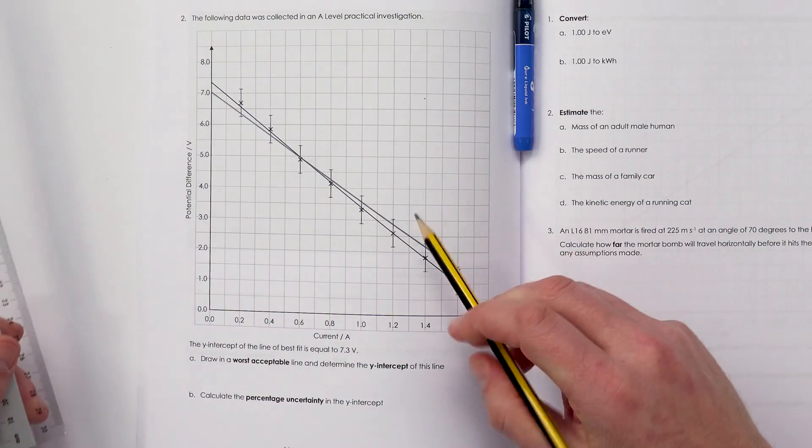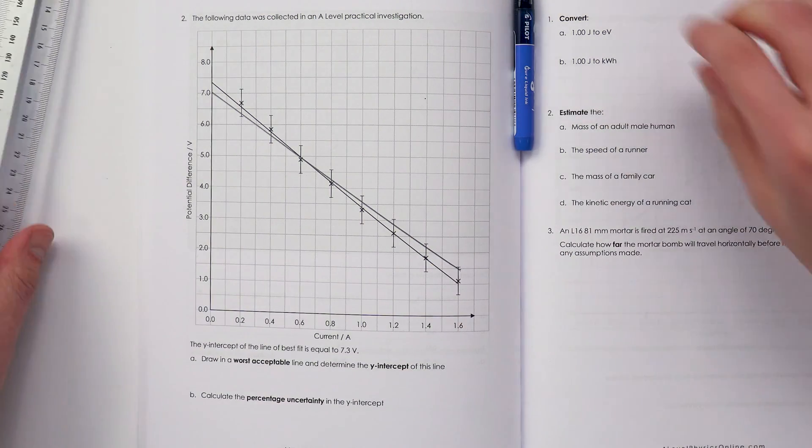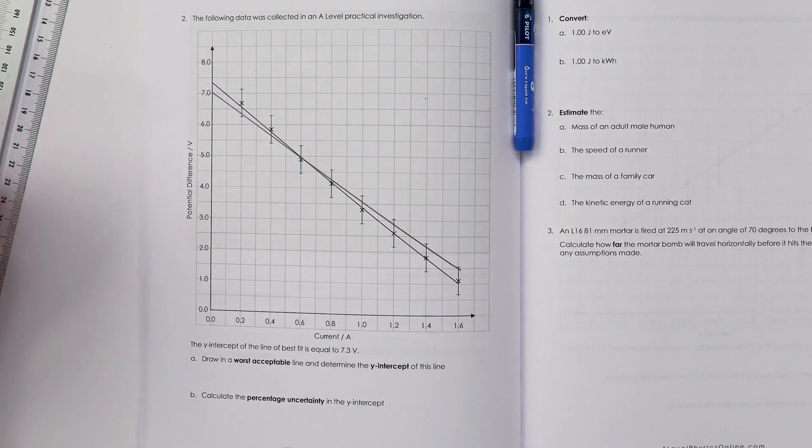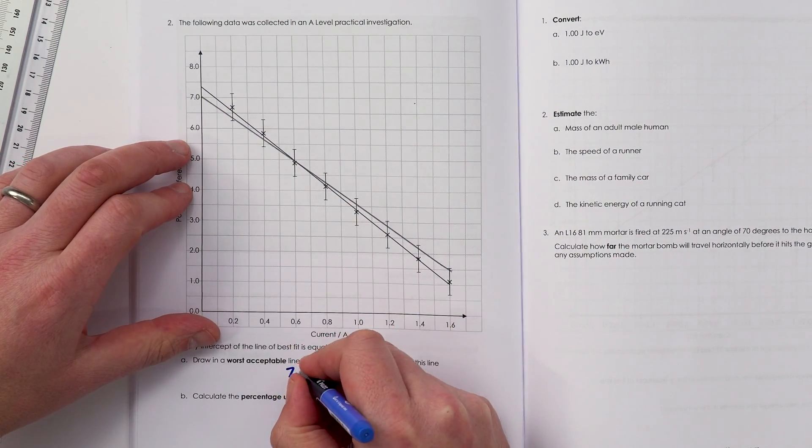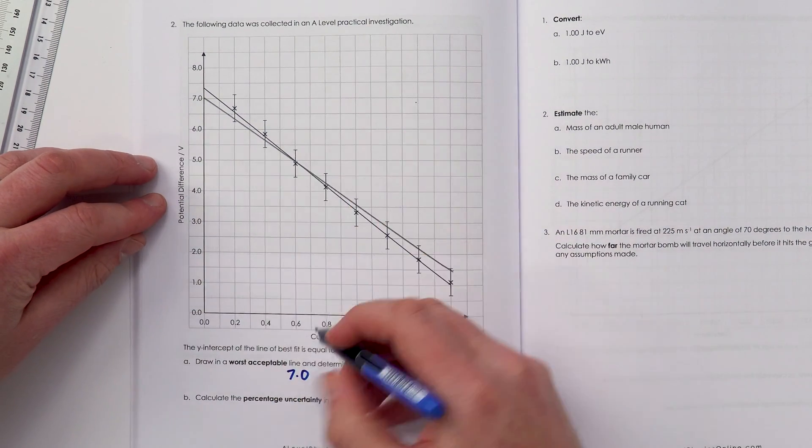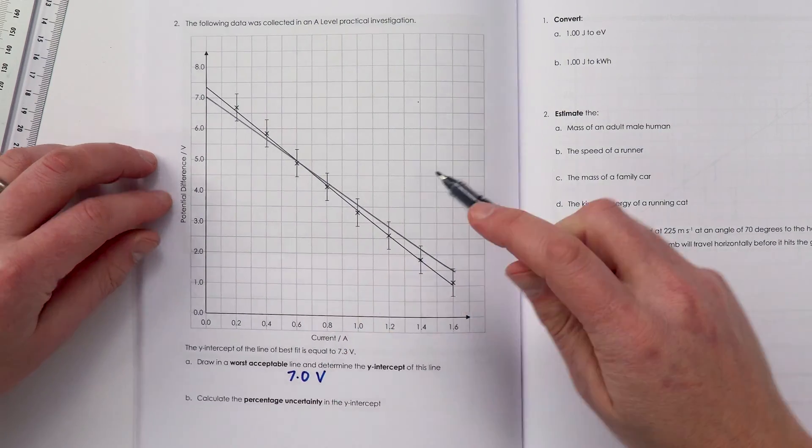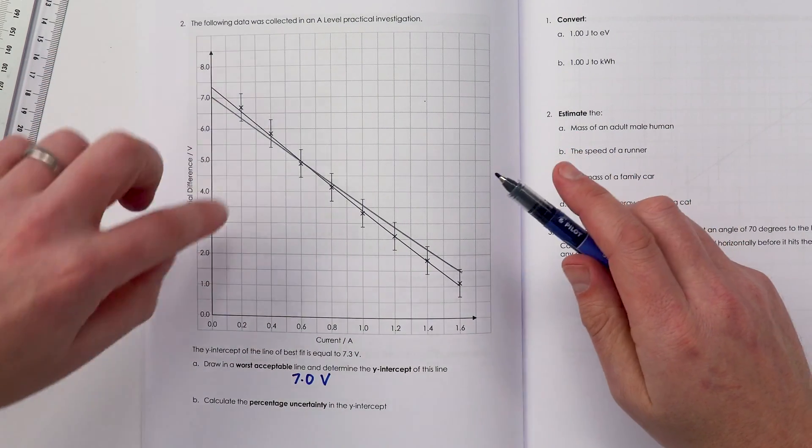That pencil line there is my worst acceptable line of best fit. To determine the y-intercept of this, I reckon this goes through the point 7.0, and the units for that are going to be volts because we always have a unit with the graph here.